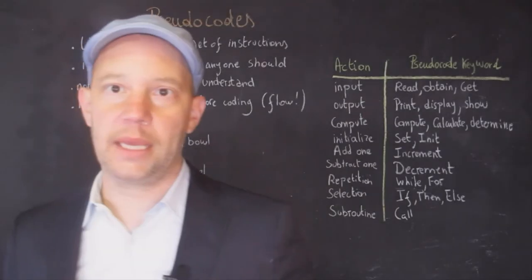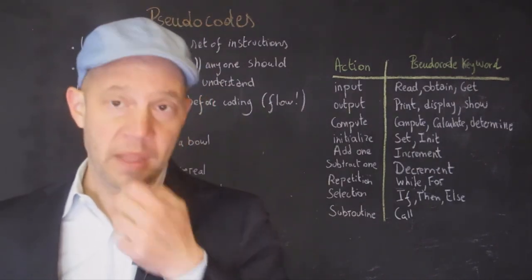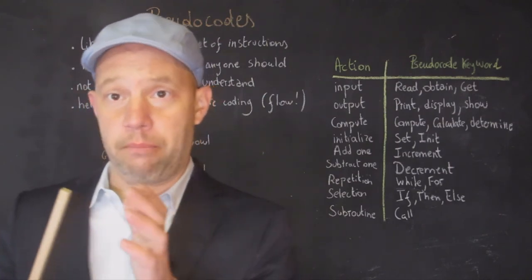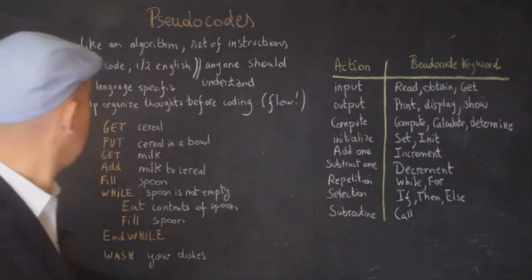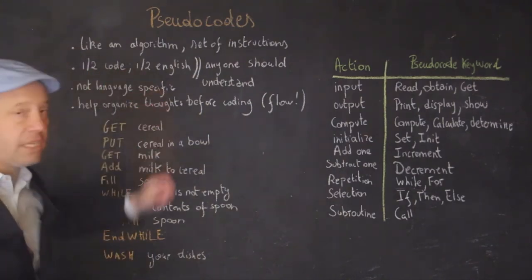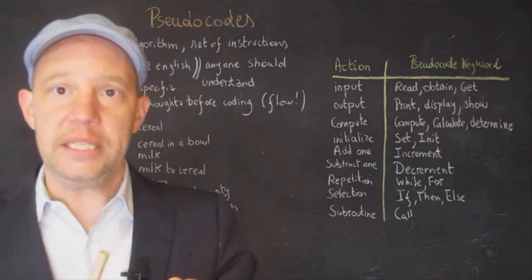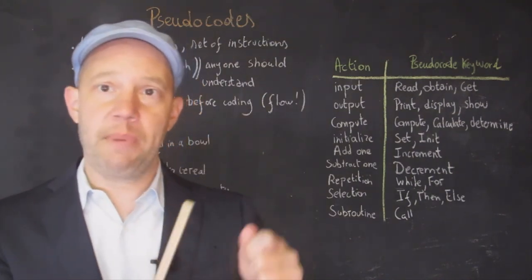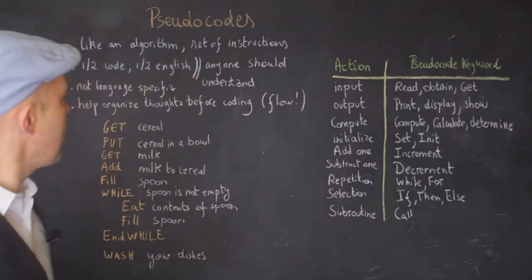Our last topic is on pseudocode. So, pseudocode work a little bit like an algorithm. There is a set of instructions. But they are not written in a programming language quite yet. They're mostly written in half code, half English that anyone can understand. Once you have written pseudocode, then it's easy to apply or implement those to a programming language.